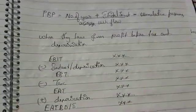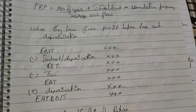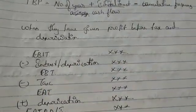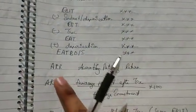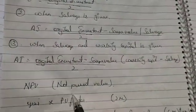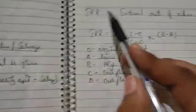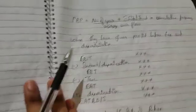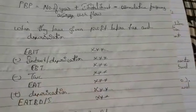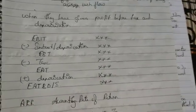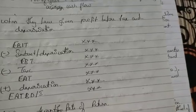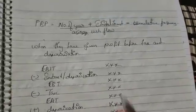Welcome to Top Education. In this session we are doing the fourth chapter of FM. Here we have PBP which is payback period, then we have ARR accounting rate of return, then NPV net present value, and IRR internal rate of return. Each topic will have a separate video so you can understand clearly.